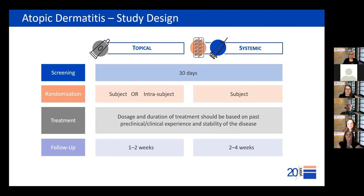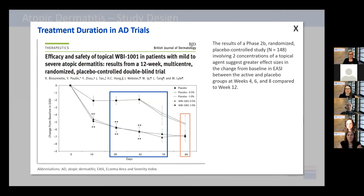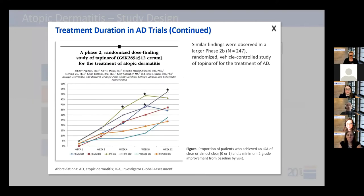Another key element to define is dosage and duration of treatment. For many AD trials, we recommend a treatment period of four to eight weeks. Atopic dermatitis is a highly symptomatic disease, so the study drug should demonstrate efficacy relatively quickly to be commercially viable. Studies have also suggested there's a greater difference in efficacy between active and control groups between weeks four and eight of treatment.